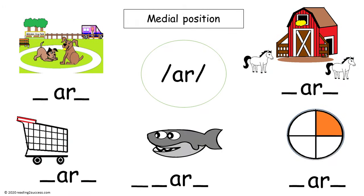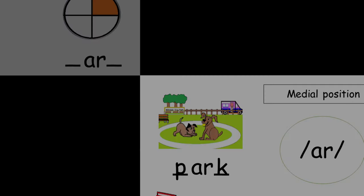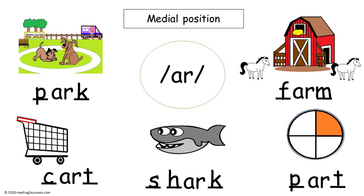Now have kids complete each word. This is a completed example: farm, park, shark, cart, and park.